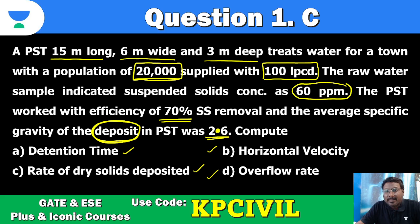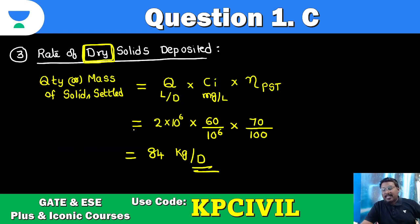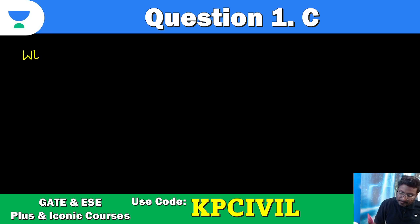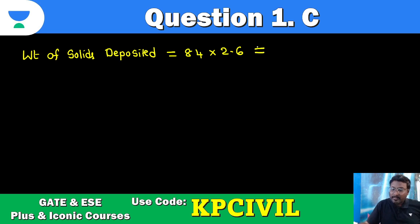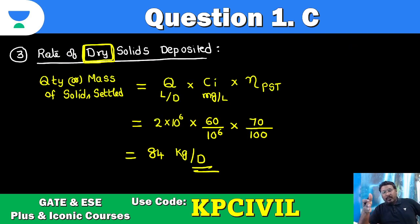Q, estimated Q liter per day, 2 into 10 power 6 liter per day. CI 60 milligram per liter converted to kg divided by 10 power 6. Efficiency 70, 70 by 100. We are going to get 84 kg per day. So rate, they are asking. As they are asking rate, rate of solids deposited. The rate at which solids, 84 kg solids deposited per day. Don't use any specific gravity. Because specific gravity of the sludge, it is provided. Average specific gravity of deposit. Deposit may include both liquid as well as dry solid. It is not specific gravity of dry solids. Or else, it is not at all they are asking weight. They are simply rate of dry solids deposited. So we can go ahead with 84 kg per day.